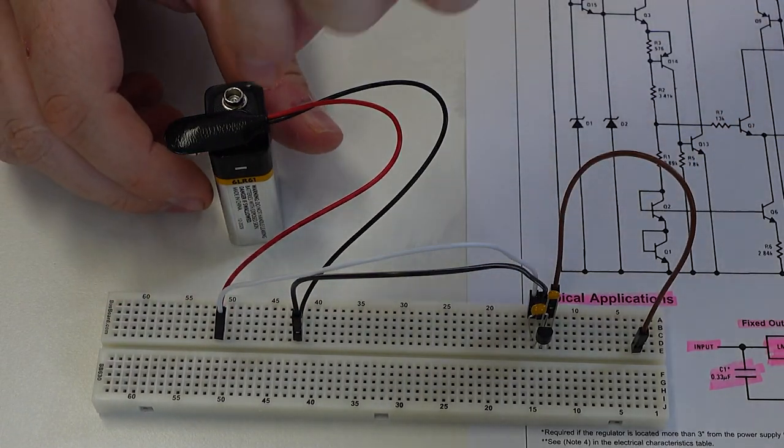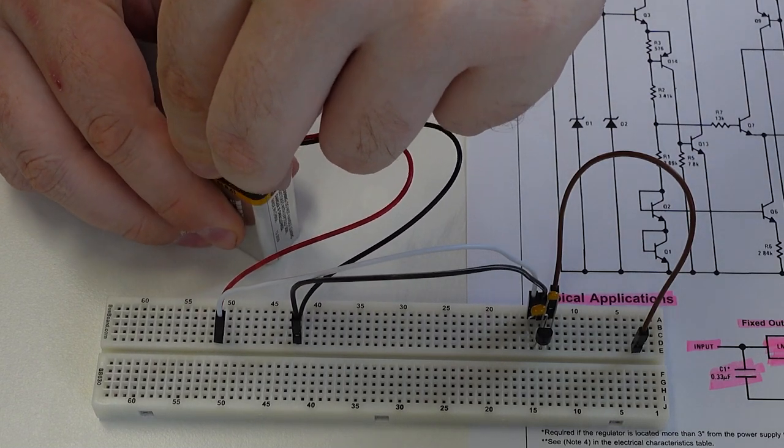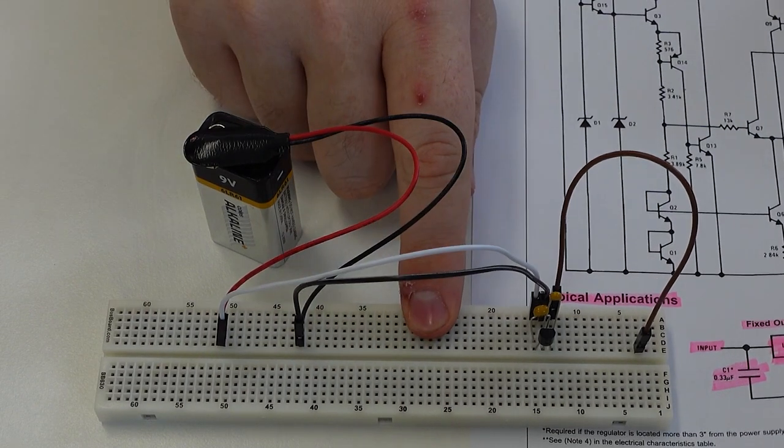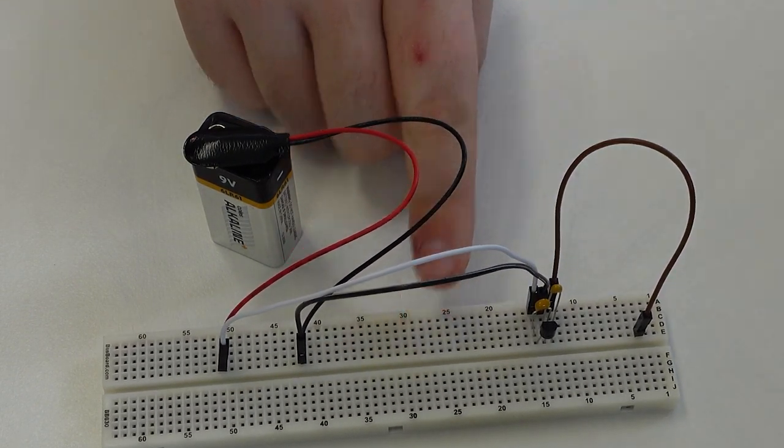And the last thing we can do is we can turn our power on. So now our LDO will be outputting voltage. It'll be regulating our voltage down to five volts.